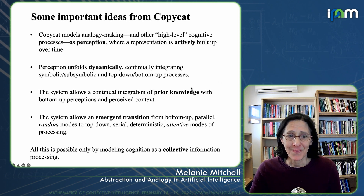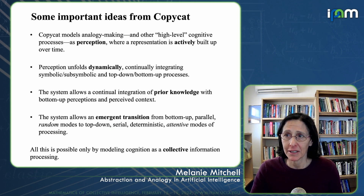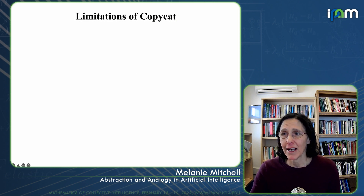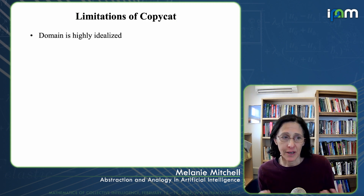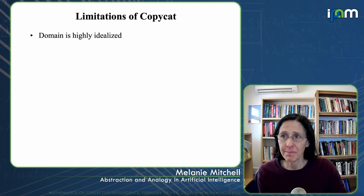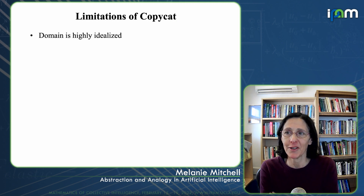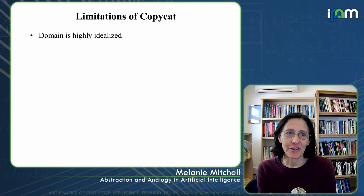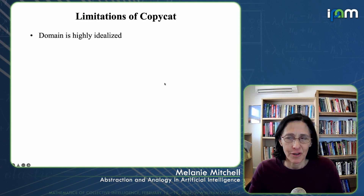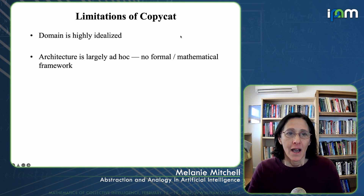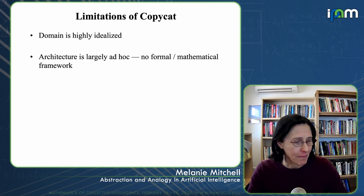I believe all of this is possible only by modeling cognition as a kind of collective information processing. Of course, this system has many limitations. The domain is highly idealized — that's both an advantage and a limitation. The advantage is that we can study this kind of system and it's amenable to computer modeling and potentially mathematics. On the other hand, it's not totally clear how generalizable this architecture is, and that will be shown only empirically in current work. It's also largely ad hoc — there's no formal mathematical framework.